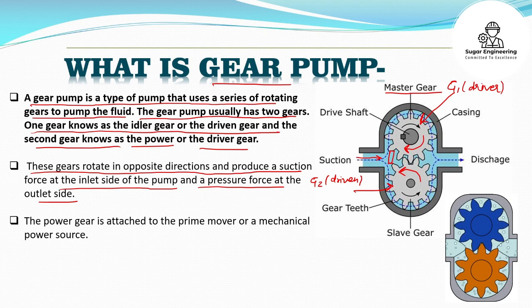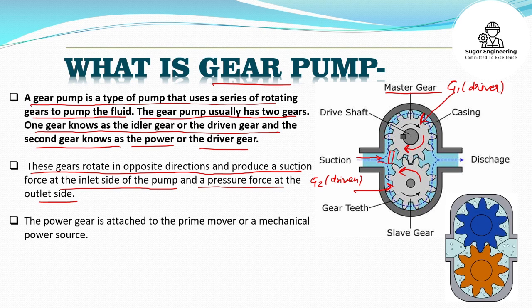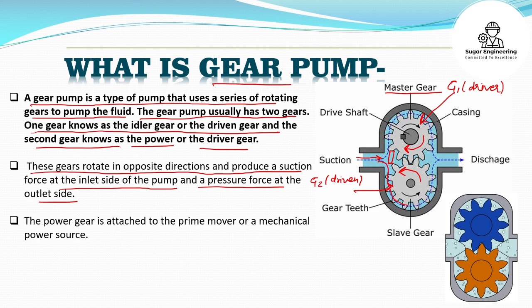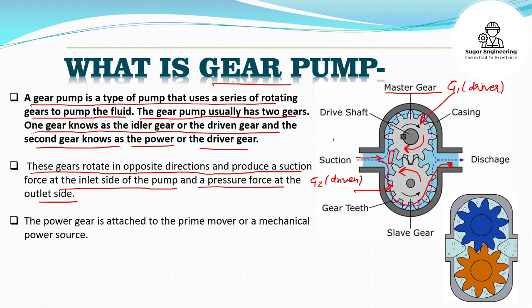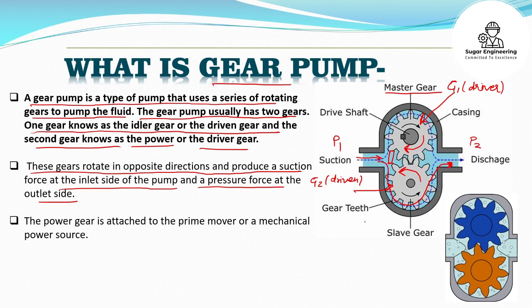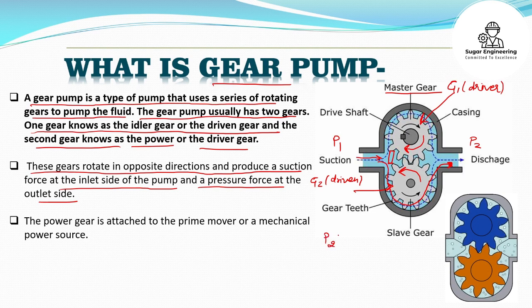A suction vacuum will be generated between the gaps of the teeth of the gears, and the fluid will take this path to the discharge or outlet port. If the pressure at suction is P1 and the pressure at discharge is P2, then P2 is always greater than P1.